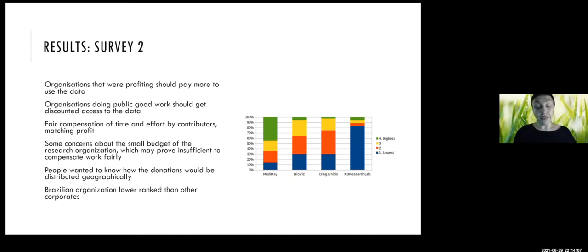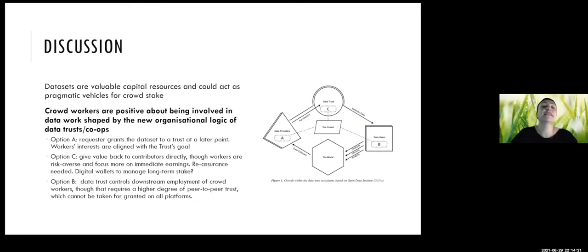So those that were profiting more should pay more. Finally, they really wanted to know how those donations of that Swedish company would look like and where exactly would they go and how they would be distributed geographically, which we thought is quite interesting. And this is just to conclude, and in the paper we're proposing three different options to realize data governance structures that would involve a large number of trustees from the crowd from citizen participants. Thank you.